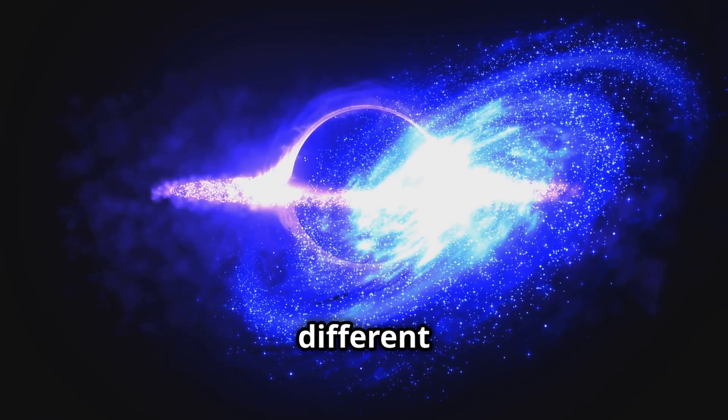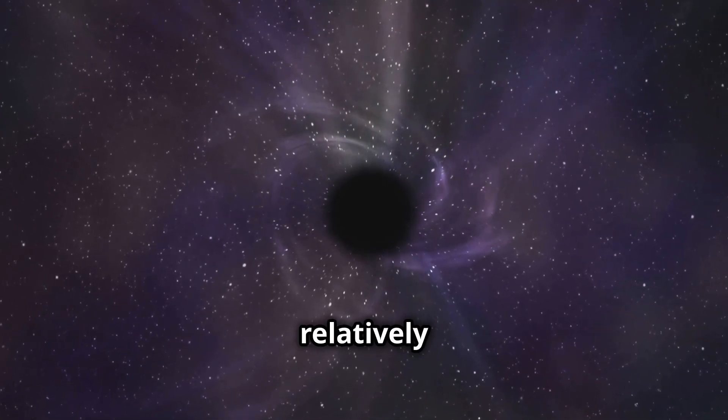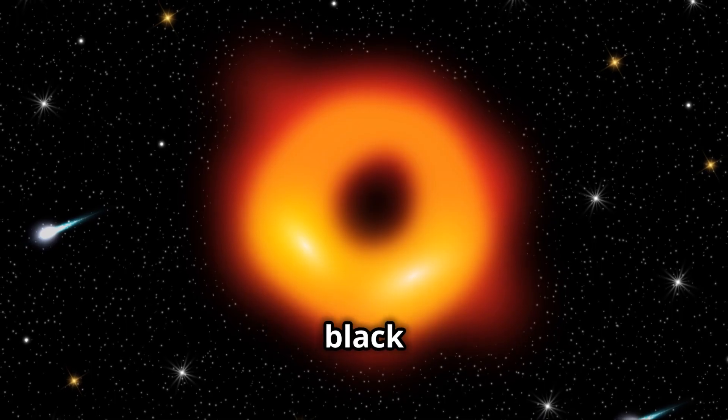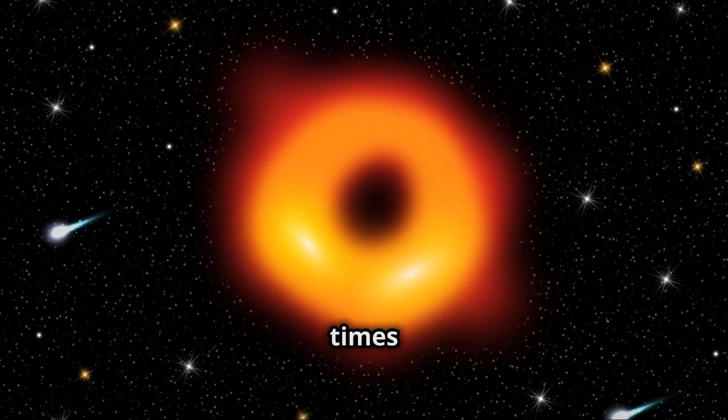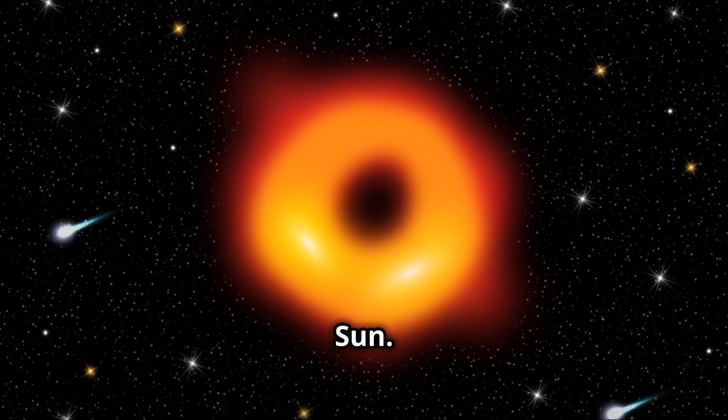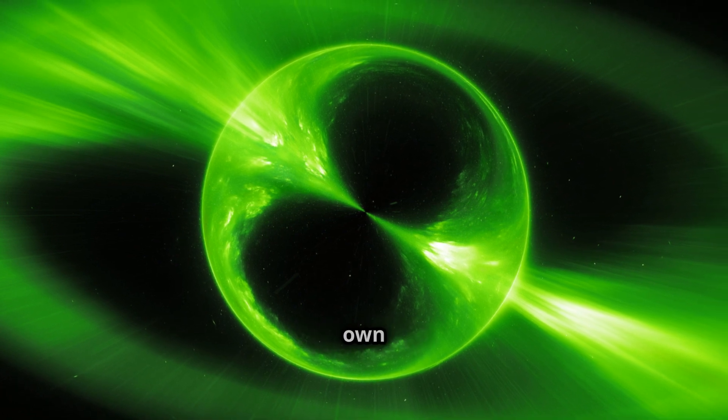Black holes come in different sizes. Stellar black holes formed from collapsed stars are relatively small. Supermassive black holes, on the other hand, are millions or even billions of times the mass of our sun. These behemoths lurk at the centers of galaxies, including our own Milky Way.